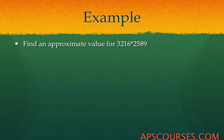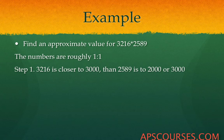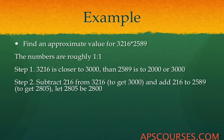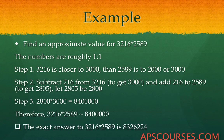Find an approximate value for 3216 multiplied by 2589 — an even more complex calculation. The numbers are roughly in the ratio 1 is to 1, so we apply the 1up1down method. Since 3216 is closer to 3000, subtract 216 from 3216, then add 216 to 2589 to get 2805, approximated as 2800. Multiply 2800 by 3000 to get 84 lakh as the approximate value. The exact answer is 83 lakh 26224, giving a reasonable value to work with.